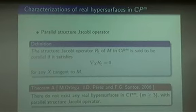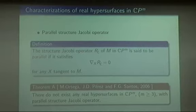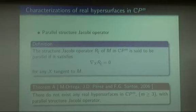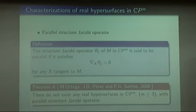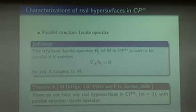There are many results using the structure Jacobi operator. Among them, I will introduce some results with the parallel notion of the structure Jacobi operator. In 2006, Professor Perez, Ortega, and Santos gave the parallel structure Jacobi operator: the structure Jacobi operator is called parallel when its covariant derivative in any direction X vanishes. Using this notion, they gave a non-existence theorem for real hypersurfaces in complex projective space.